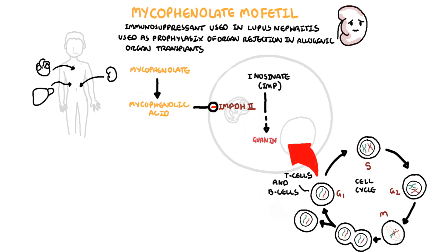Guanine is required in order to make DNA, RNA, and other proteins. T and B lymphocytes require de novo production of guanine nucleotides in order to make DNA, and this is unlike neutrophils and other cells, which can use preformed guanine released from the breakdown of preformed nucleic acids.